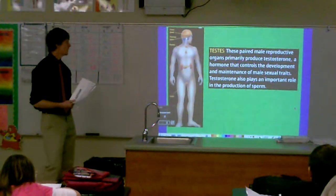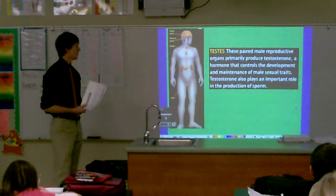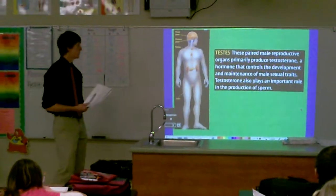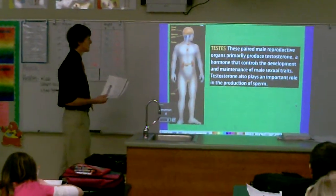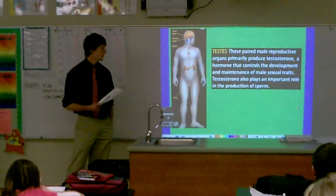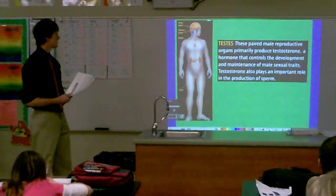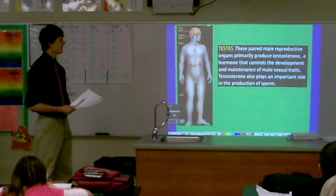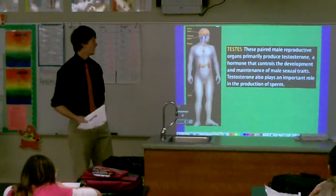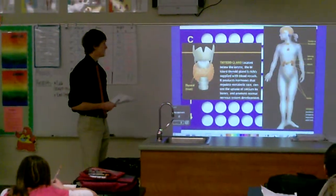Testes — these are in the guys. It's the male reproductive organ, and it primarily produces testosterone, which is a hormone that controls the development and maintenance of male sexual traits. Testosterone also plays an important role in the production of sperm. So when guys go through puberty, testosterone is produced, and they start to get a deeper voice, their shoulders broaden — all sorts of stuff. So it's largely due to testosterone.